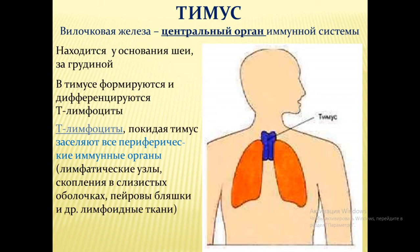Тимус, или вилочковая железа, — тоже центральный орган иммунной системы. Здесь Т-лимфоциты, образовавшиеся в красном костном мозге, приобретают направленность: становятся Т-киллерами, Т-хелперами и Т-регуляторами. Покидая тимус, они заселяют все периферические иммунные органы — лимфатические узлы, лимфатические скопления в желудочно-кишечном тракте и слизистые оболочки.